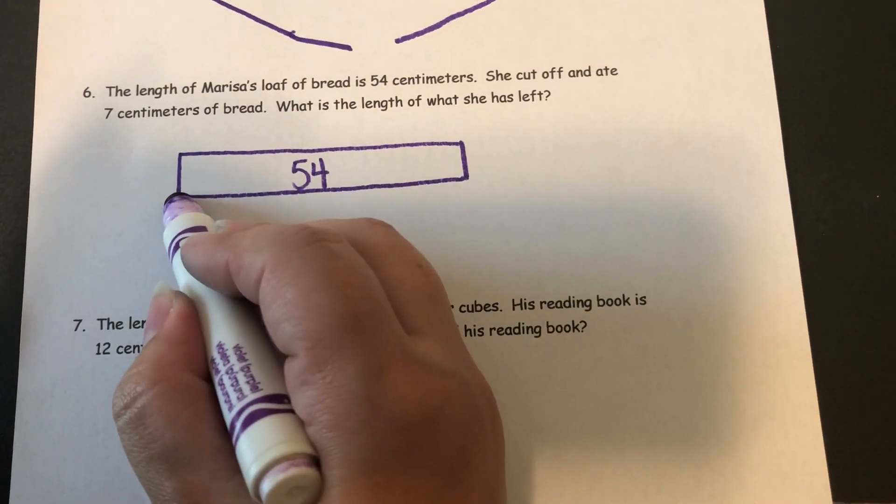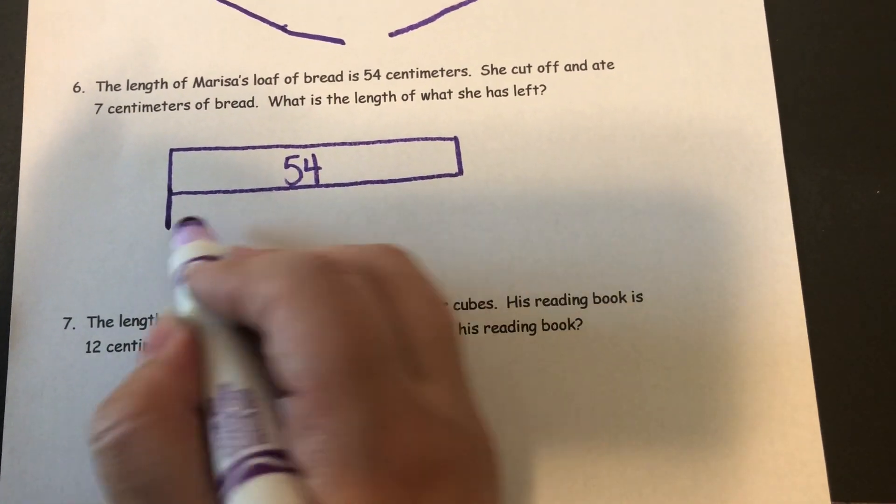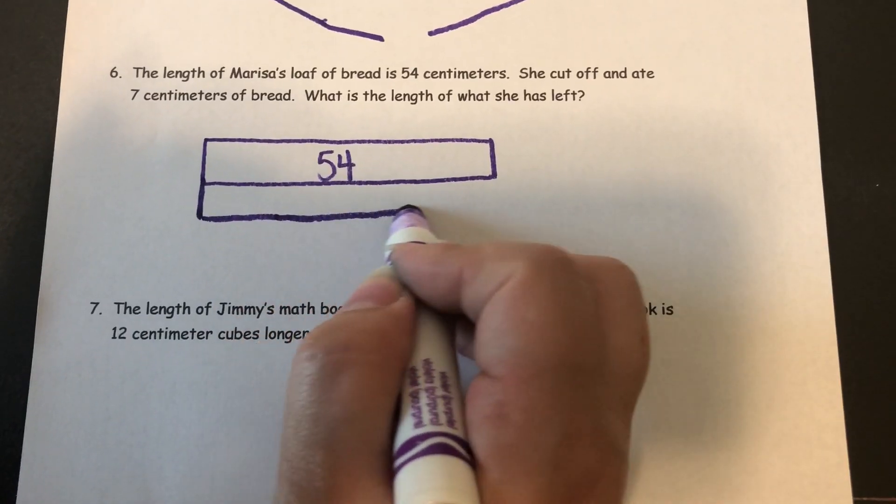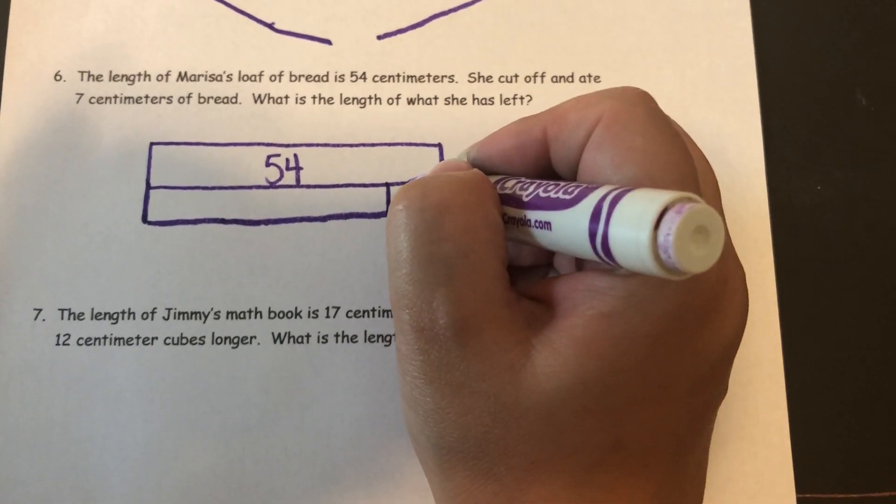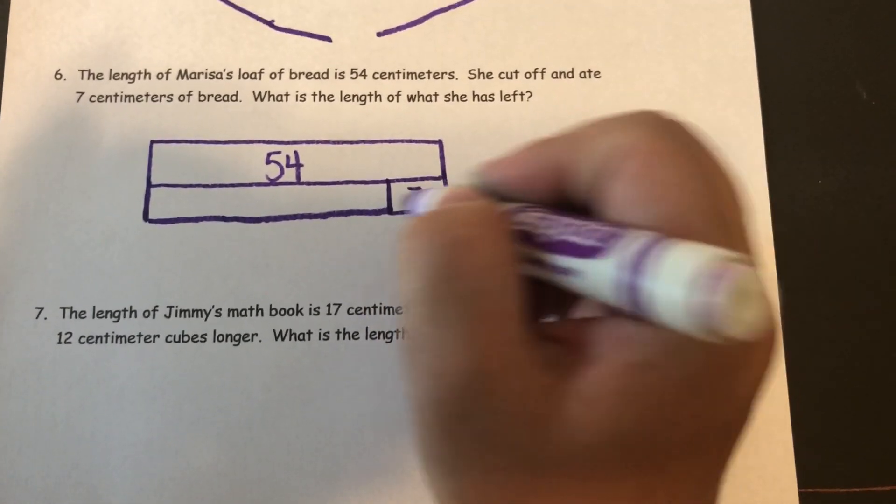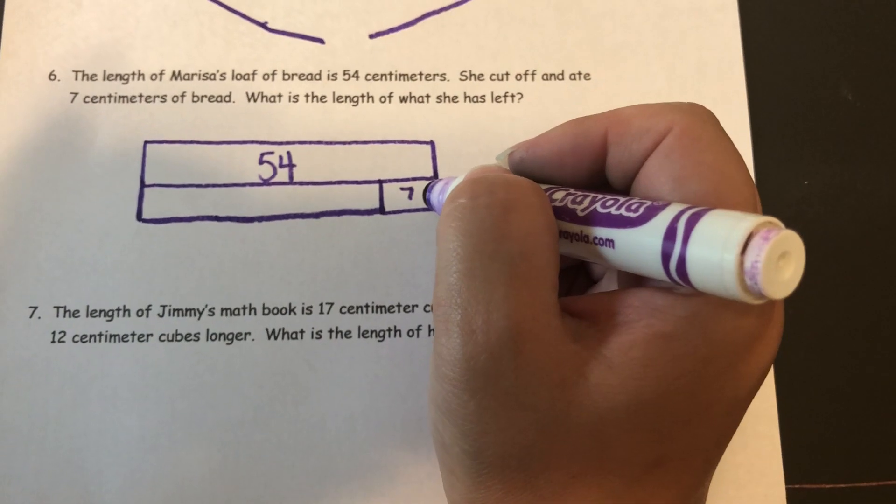So she ate 7 of these centimeters. So I'm going to need to take away 7. So I'm going to draw a second tape where I have taken away the 7. And I'll say that this chunk represents the 7 that she ate.